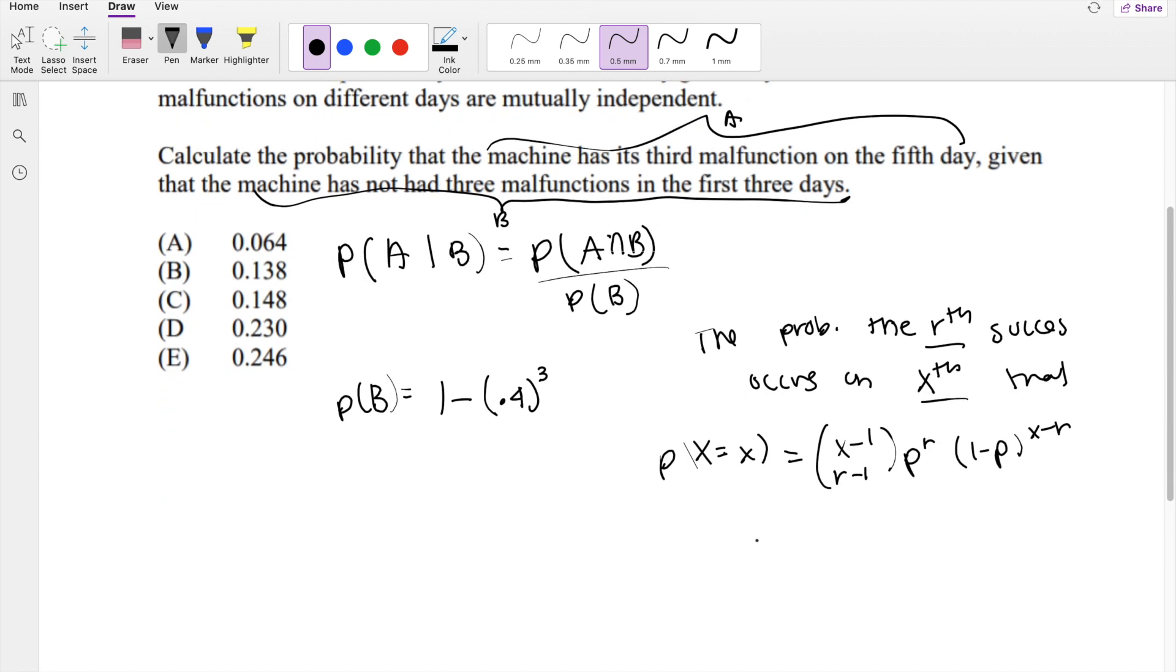So in our case, rth success, r will be three. Three is our success, malfunction is our success, which kind of sounds bizarre, but it's okay.